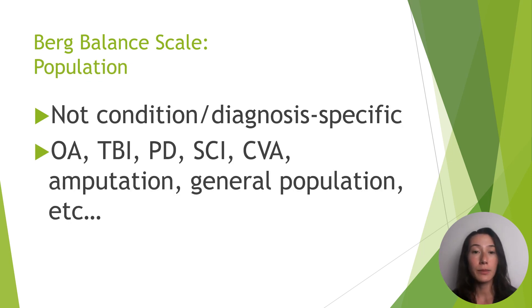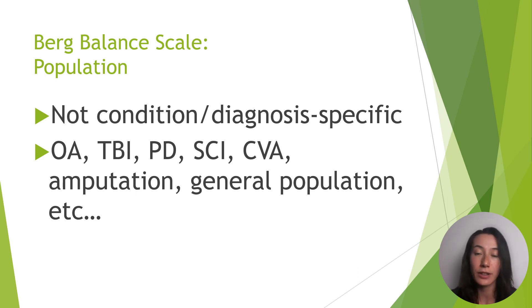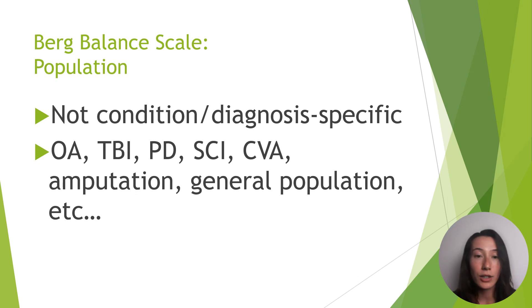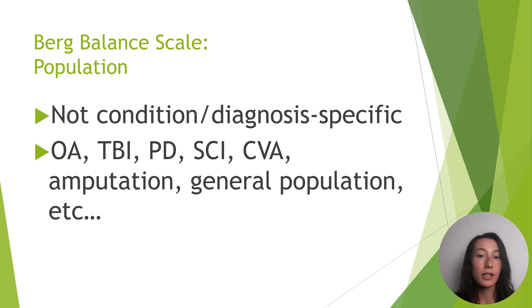With functional outcome measures, we have some that are very condition specific. For example, Fugl-Meyer — you're going to use it for people who have had a stroke specifically. However, with the Berg Balance Scale, among others, you can use this outcome measure to address plenty of populations. So for example, it could be someone who has had a stroke, spinal cord injury, amputation, TBI, OA, vestibular, Parkinson's disease, etc. This is a test that is purely used to assess whether an adult person — anyone over 18 years old — is at risk of falling, regardless of their diagnosis, even if they don't have a diagnosis in particular.